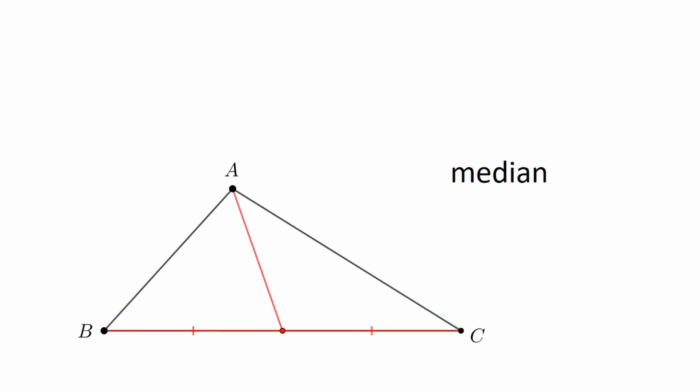A median, now that's another segment. It is drawn from a vertex to the midpoint of the opposite side. As you can see, the median from A divides segment BC into congruent segments. Medians are always found inside their triangle like this median from B and also the median from C.